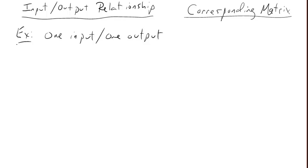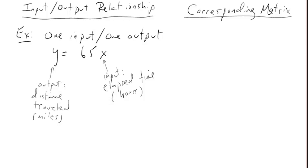The first example has one input and one output: y equals 65 times x. The input is x, the output is y. To give this an interpretation, x could be the elapsed time in hours you've been traveling, y the distance you travel, and 65 represents how fast you're traveling in miles per hour. The corresponding matrix is just a one-by-one matrix, simply the matrix 65.